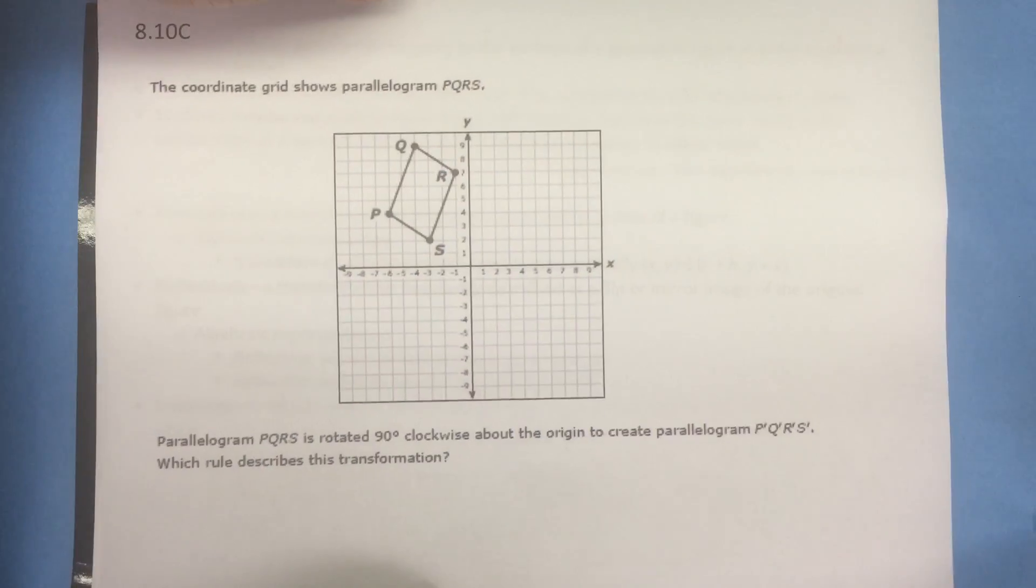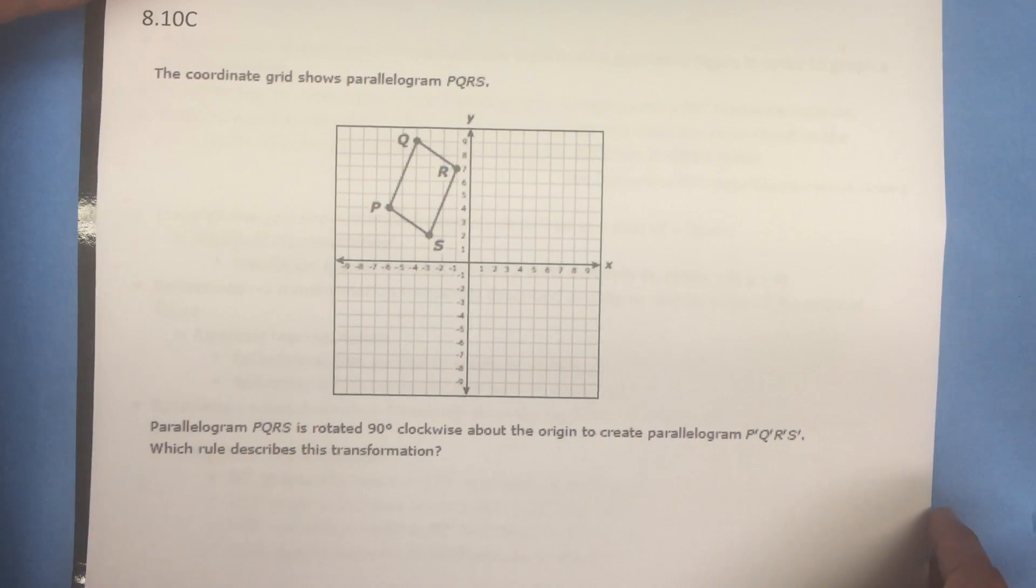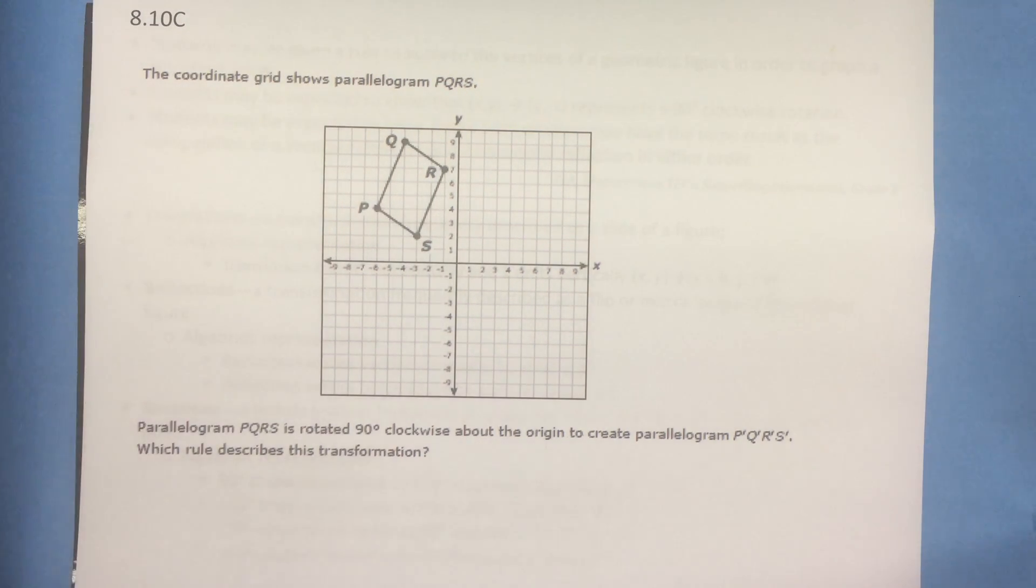Let's look at a problem now for 8.10c. The problem says the coordinate grid shows parallelogram PQRS. Parallelogram PQRS is rotated 90 degrees clockwise about the origin to create parallelogram P'Q'R'S'.